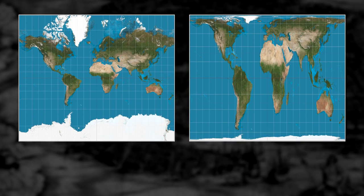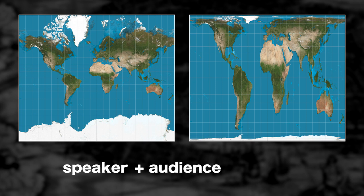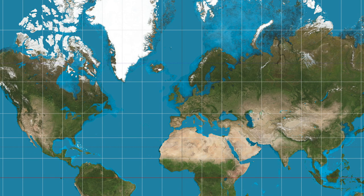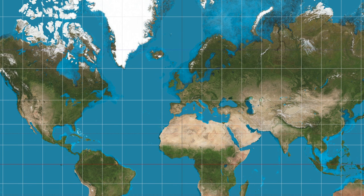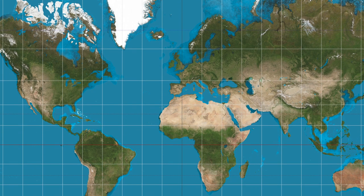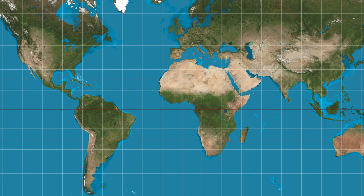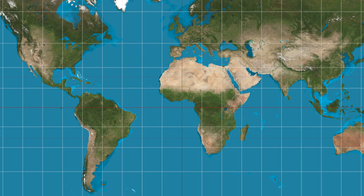Like any language, we must first have a clear understanding of the speaker — in this case the map maker — and the audience, in order to decipher the intended message. Orientation, size, and placement are just a few elements that can be manipulated for a desired purpose.